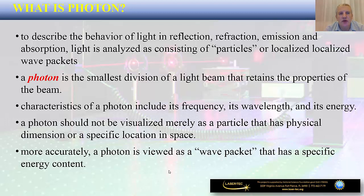We can define a photon as the smallest division of light that retains the properties of that light beam. Different colors of light will have a specific type of photon described by its frequency, its wavelength, and its energy. More accurately, we look at a photon as a wave packet that carries a specific content of energy.